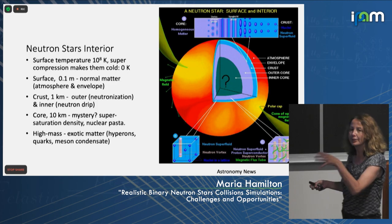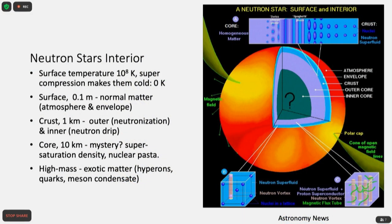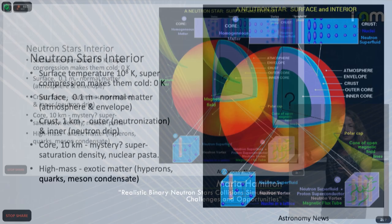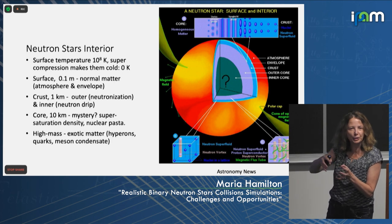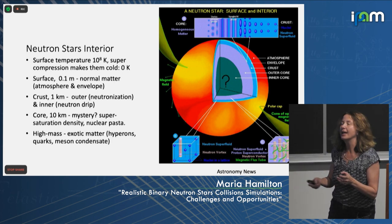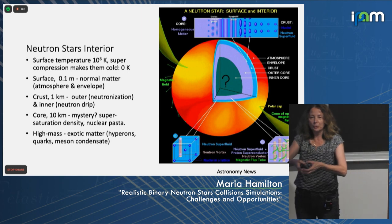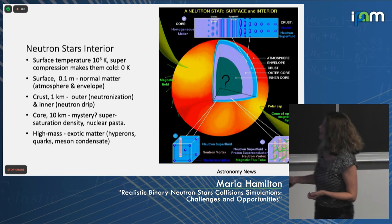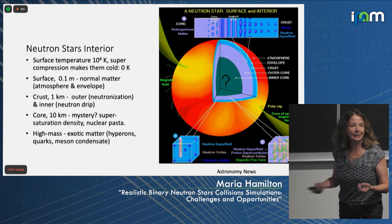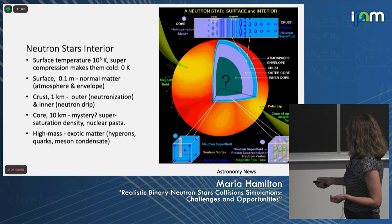The inside of neutron stars is in many layers. The surface is made of atmosphere and envelope — the atmosphere is regular gases, the envelope is a lattice of iron, which is magnetized. The crust is one kilometer thick, where nucleons start to be stuffed with neutrons — this is called neutronization. Then the inner crust, where the nucleus is so squished together that neutrons start to get out — neutron drip. And then the core. That's the mystery — finding out what the core is made of.